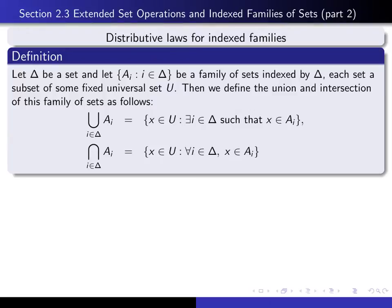We first recall some definitions from the previous video. If we let delta be any set, and we let a sub i, such that i is an element of delta, be a family of sets indexed by delta, then we can define the union and the intersection of this entire family of sets. The union is the set of all x in our universe such that there exists an i in the indexing set delta such that x is in a sub i. The intersection is the set of all x in our universe such that for every i in the indexing set delta, x is in a sub i.